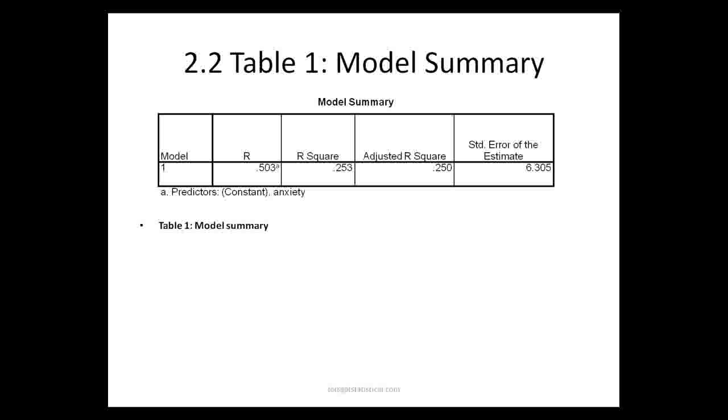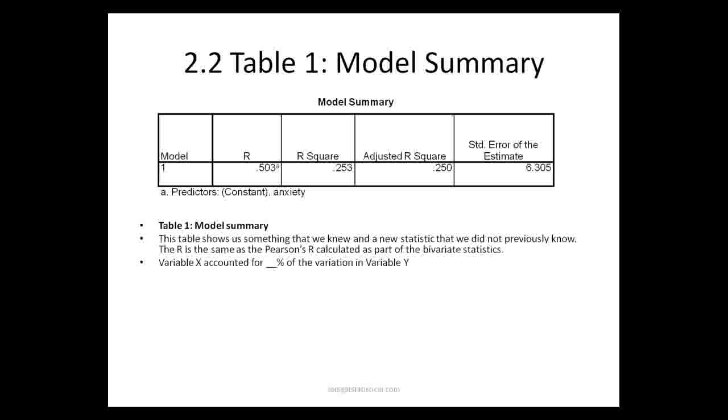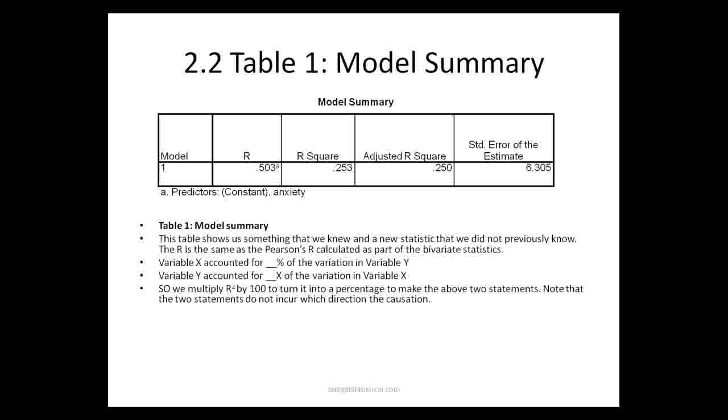This tells us the r and the r-square. It is nothing that we previously did not know but the r-square is probably worth talking about. R-squared is r times r. It gives us a percentage of which we can say variable X is accounted for X percent in variable Y. And variable Y accounted for percent of variable X. So in the above situation we could say anxiety accounted for 25.3% of the variation in depression score and vice versa.